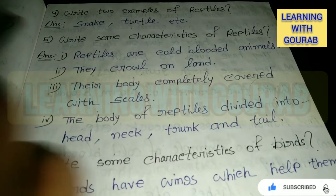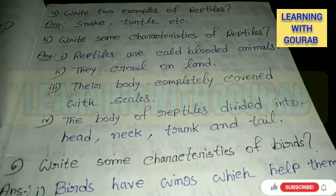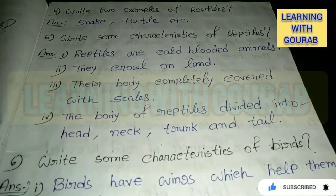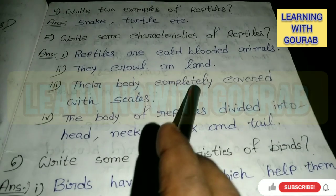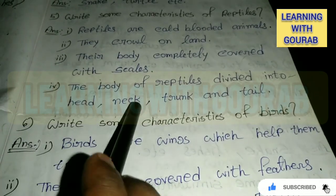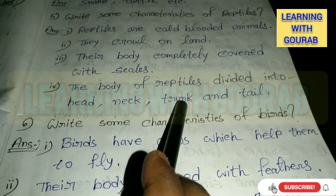Next question: Write characteristics of reptiles. Answer: Reptiles are cold-blooded animals. They crawl on land. Their body is completely covered with scales. The body of reptiles is divided into head, neck, trunk, and tail.